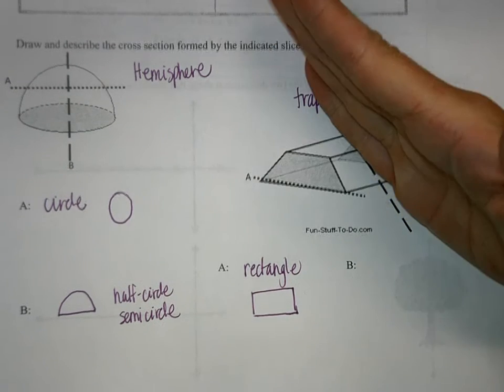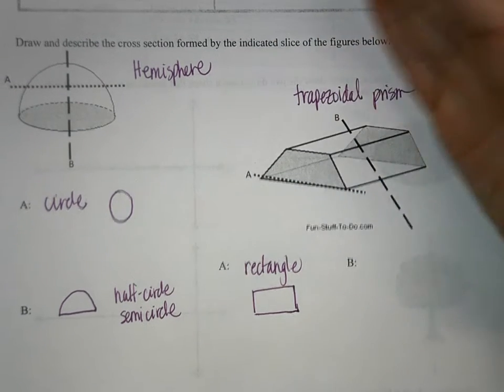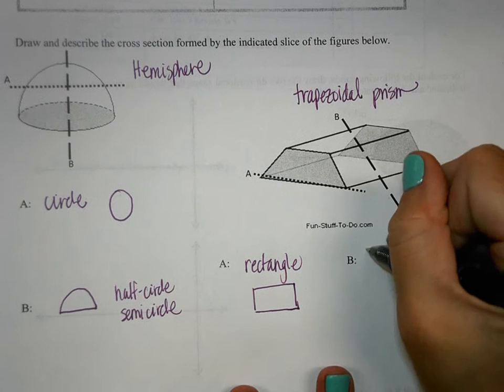And then on B, it's slicing through the middle kind of here, and so that would end up making a trapezoid.